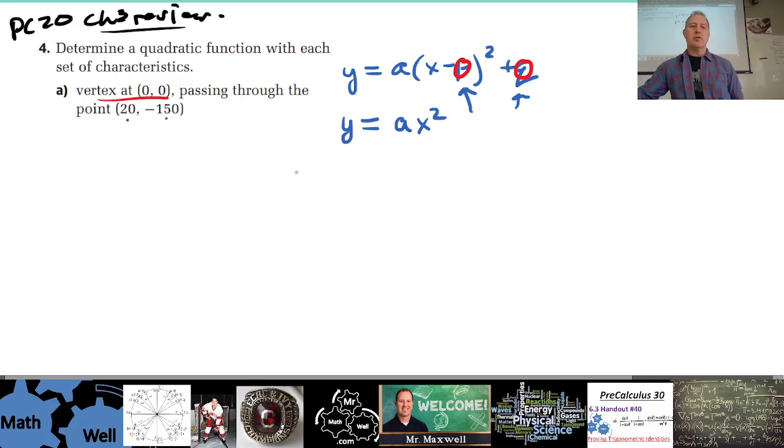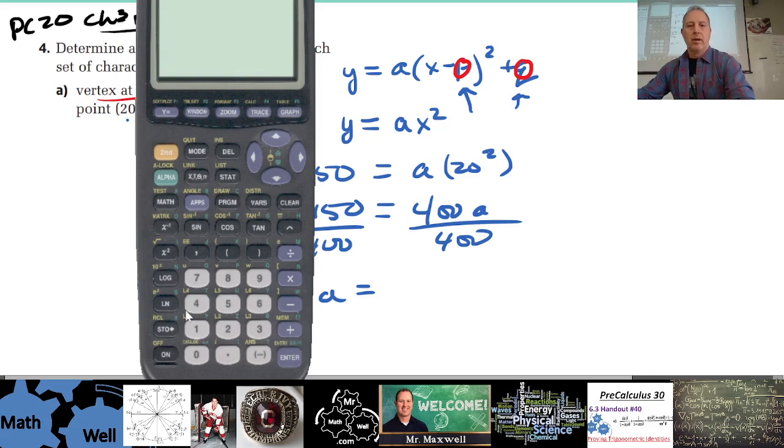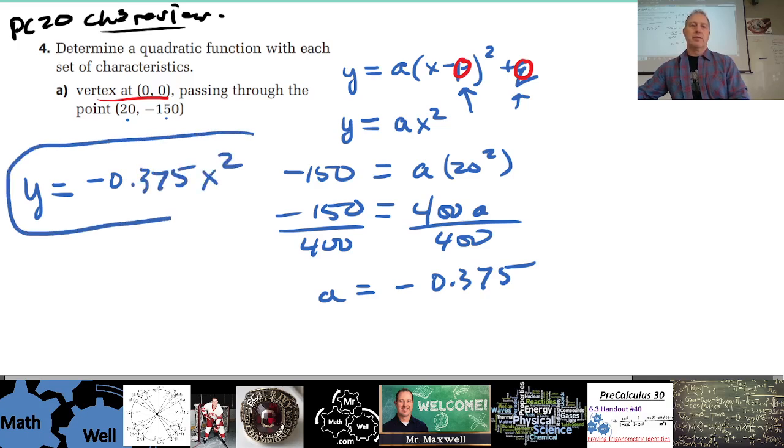So I'll just do that with you here. So -150 equals a times 20 squared, which 20 squared is what, 400? So we have 400a, -150 divided by 400. So we then have a is what, negative 0.375, so negative 0.375, and so our quadratic function is y equals -0.375x squared. So that's that for that one.